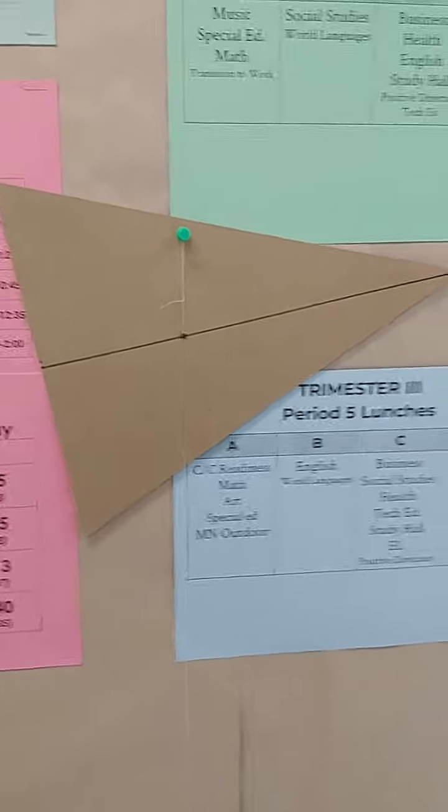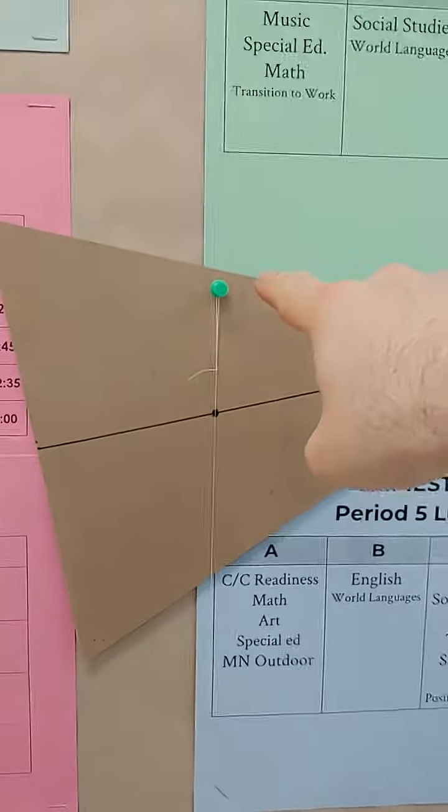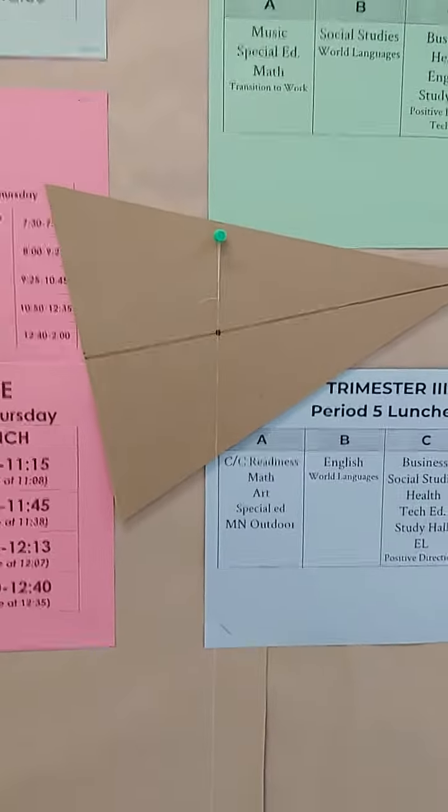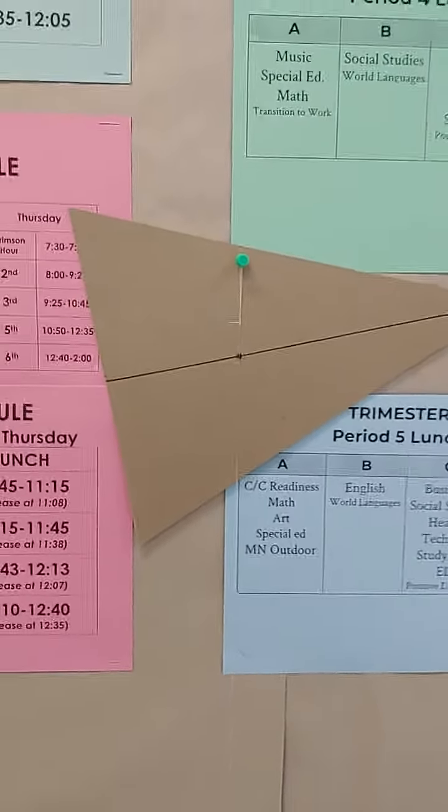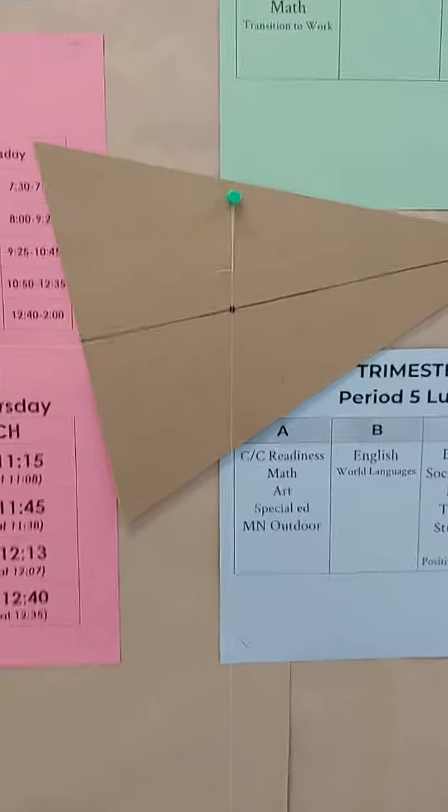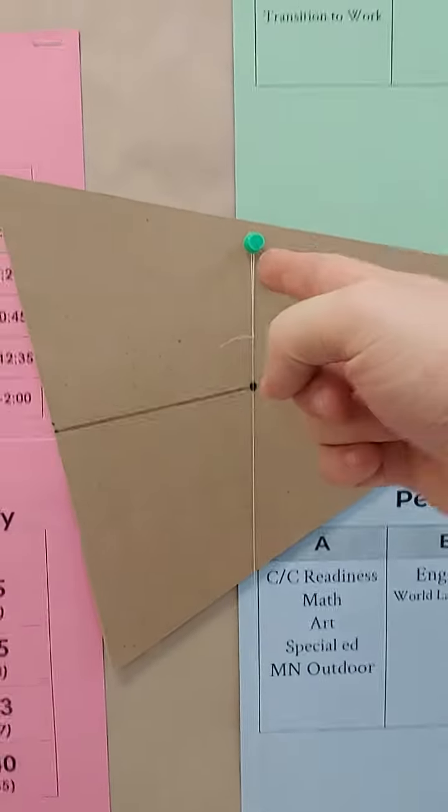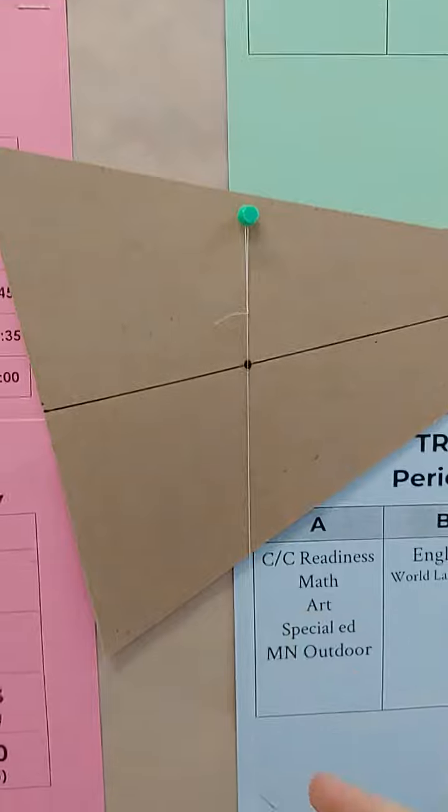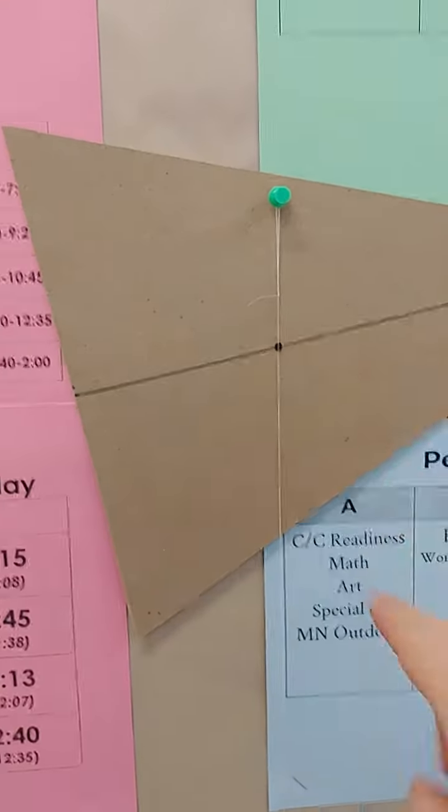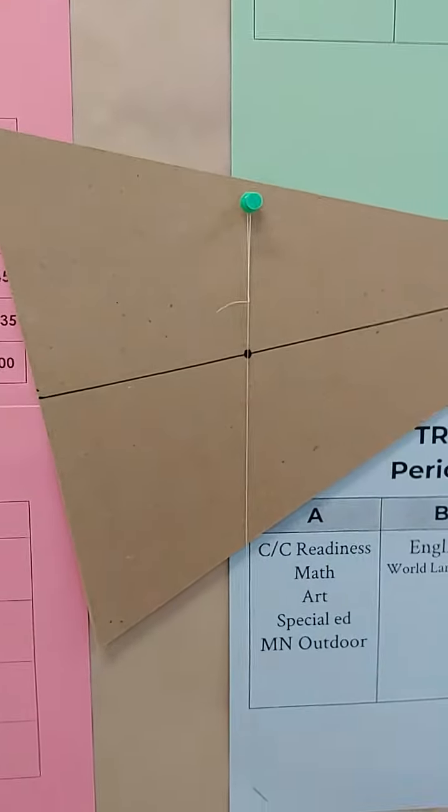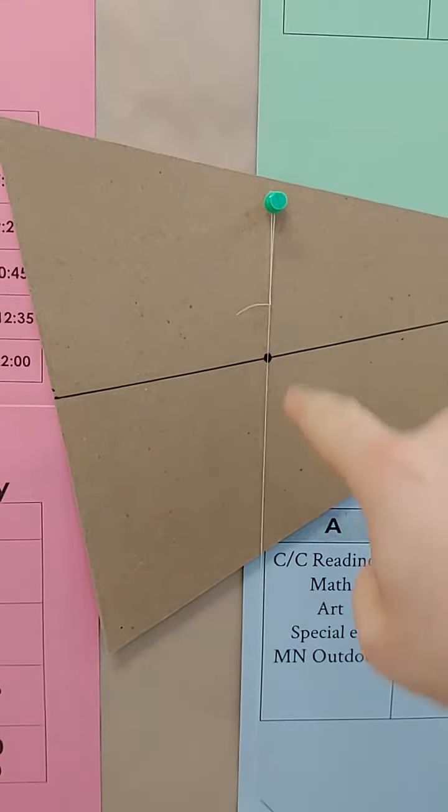All right, so we've got it hanging from a new position up here, and we can see this hangs at another angle again because the hole is in a different spot. But once again, the center of mass always hangs directly below the point that it's hanging from. And so again, the center of mass has to be on this line. And we see that sure enough, our plumb bob once again crosses where the other two lines crossed because that has to be the center of mass.